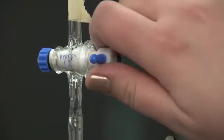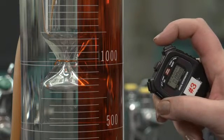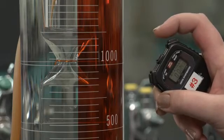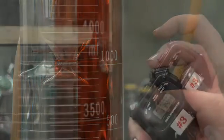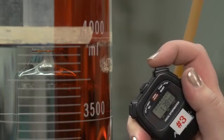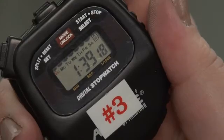When ready, open the stopcock to the effusion hole. Start the stopwatch when the water level is even with the lower constriction. Stop the stopwatch when the water level reaches the upper constriction. Record the time to the nearest one hundredth of a second.